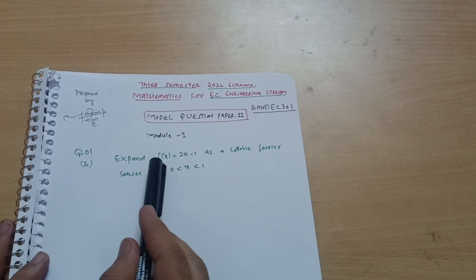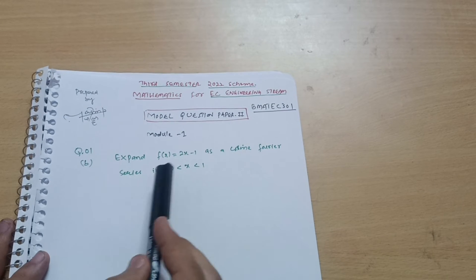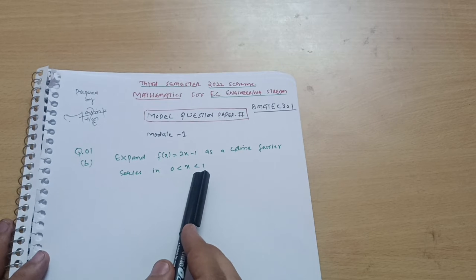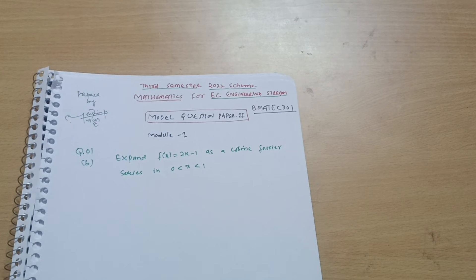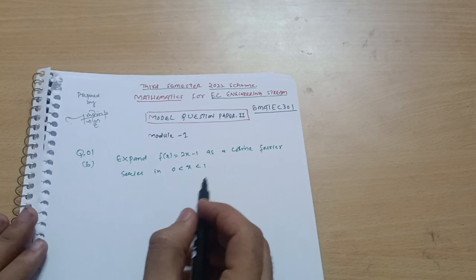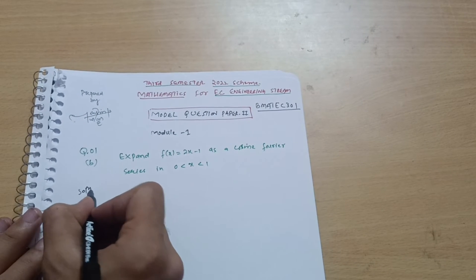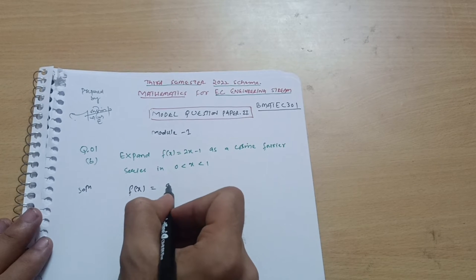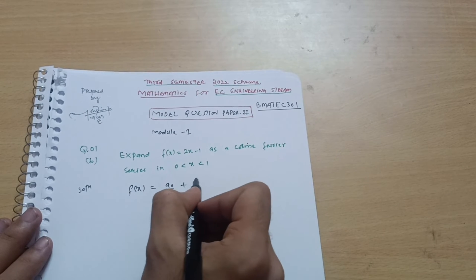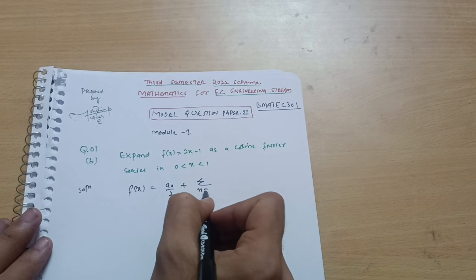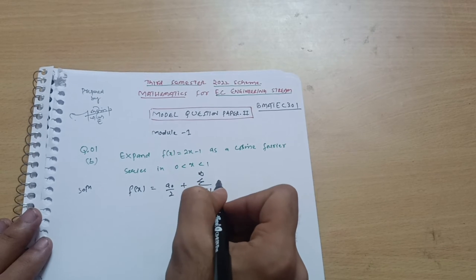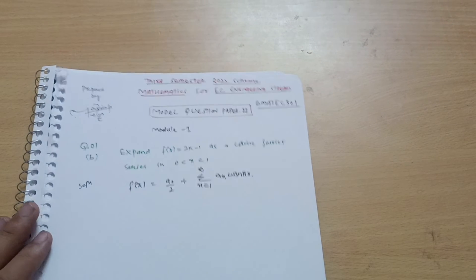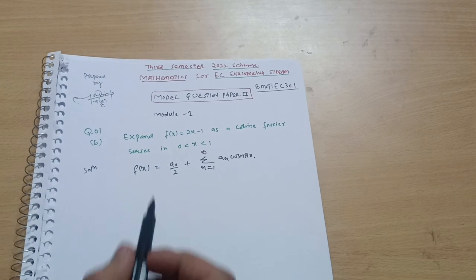So expand f(x) = 2x − 1 as a cosine Fourier series in 0 < x < 1. The cosine Fourier series expansion is given by f(x) = a₀/2 plus summation of n running from 1 to infinity of aₙ cos(nπx). This is the cosine Fourier series expansion.